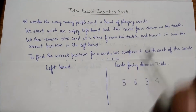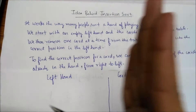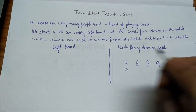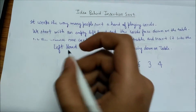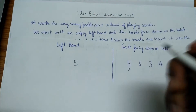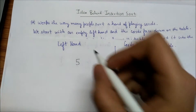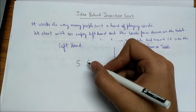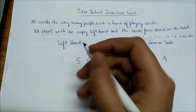To find the correct position we compare the card with each of the cards already in the left hand, from right to left. First we pick five and insert it — since the left hand is empty, it goes right in. Next we pick six and compare it with five; since six is greater than five, six comes after five. That is the correct position for six.